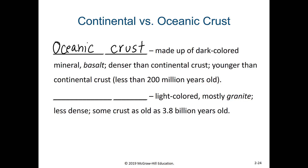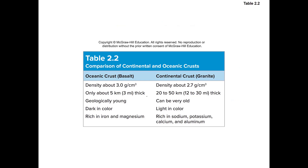Conversely, the continental crust is light colored, mostly composed of granite. It's less dense and actually thicker than the oceanic crust. Some continental crust is believed to be as old as 3.8 billion years old, and this is where our oldest fossils and oldest evidence of life are found. In this table, we can see characteristics comparing oceanic crust and continental crust — with the oceanic crust being denser, thinner, younger, darker, and possessing a different elemental composition than the continental crust.